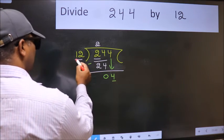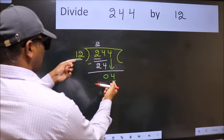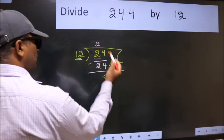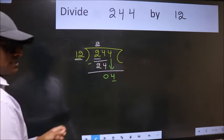Here we have 4 and here 12. 4 is smaller than 12. So what many do is they directly put dot, take 0. Which is wrong.